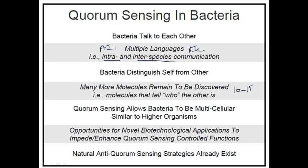By understanding quorum sensing, we can also find bacteria that already have anti-quorum sensing strategies. Bacteria are ancient — they have been on this planet much longer than us — so there may be different bacteria that produce techniques to block the invasion of other pathogens. For example, pathogen B may block pathogen A from communicating with other pathogens. If we derive those molecules that naturally block quorum sensing, we can block biofilm formation in areas like our teeth.